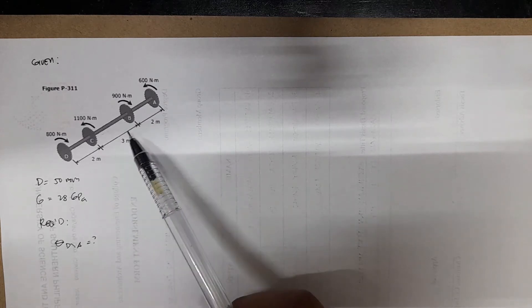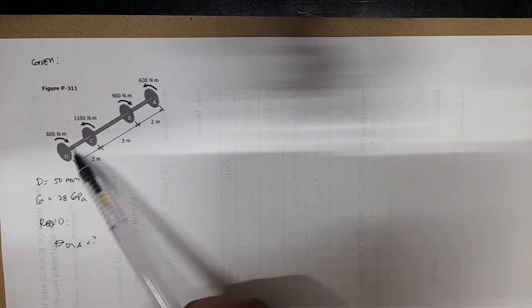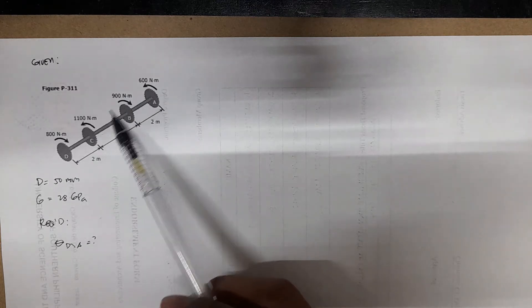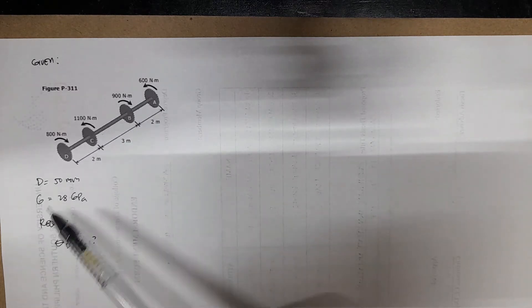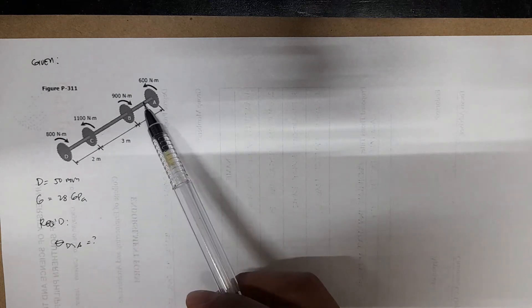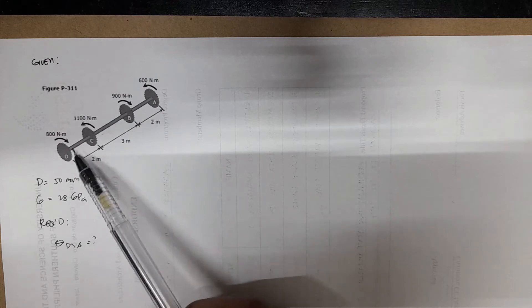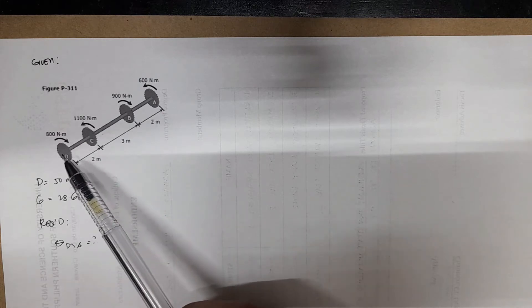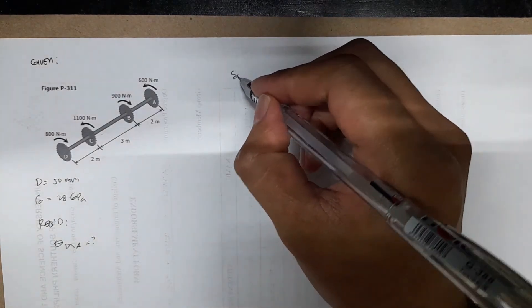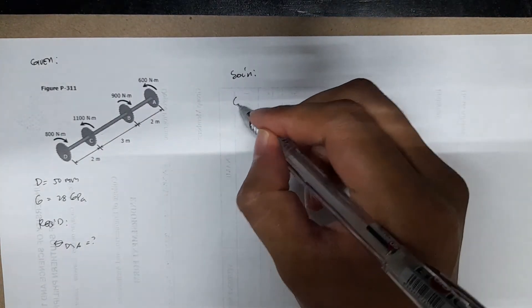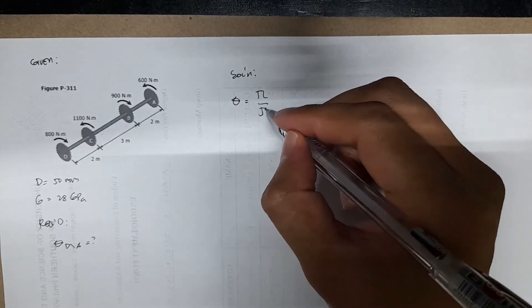So in this problem, since we are asked to find the angle of twist here, but considering all the torques at A, B, and C, we'll have to somehow sum up the angle of twists in these segments to find the resulting angle of twist in gear D. So for the solution, we have the equation for the angle of twist which is TL over JG.